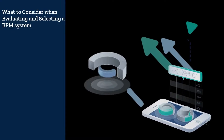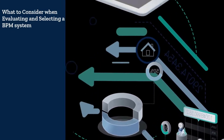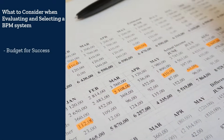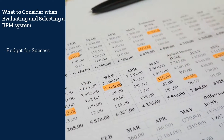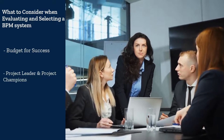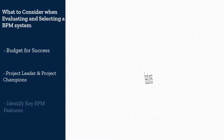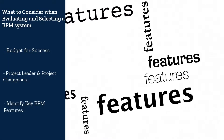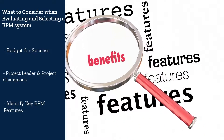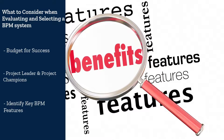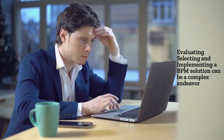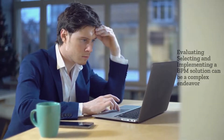Some of the key elements to consider when planning the selection of a BPM system include: keeping your budget in check with proper pre-planning; conducting an internal review to reveal exactly what your company needs; appointing a project leader or a team of champions to help minimize disruptions and manage expectations; and understanding your business and what it needs to succeed, which will help you identify which features are required from a BPM system versus what features are nice to have. Evaluating, selecting, and implementing a new BPM system can be a complex project that impacts the success of your company.